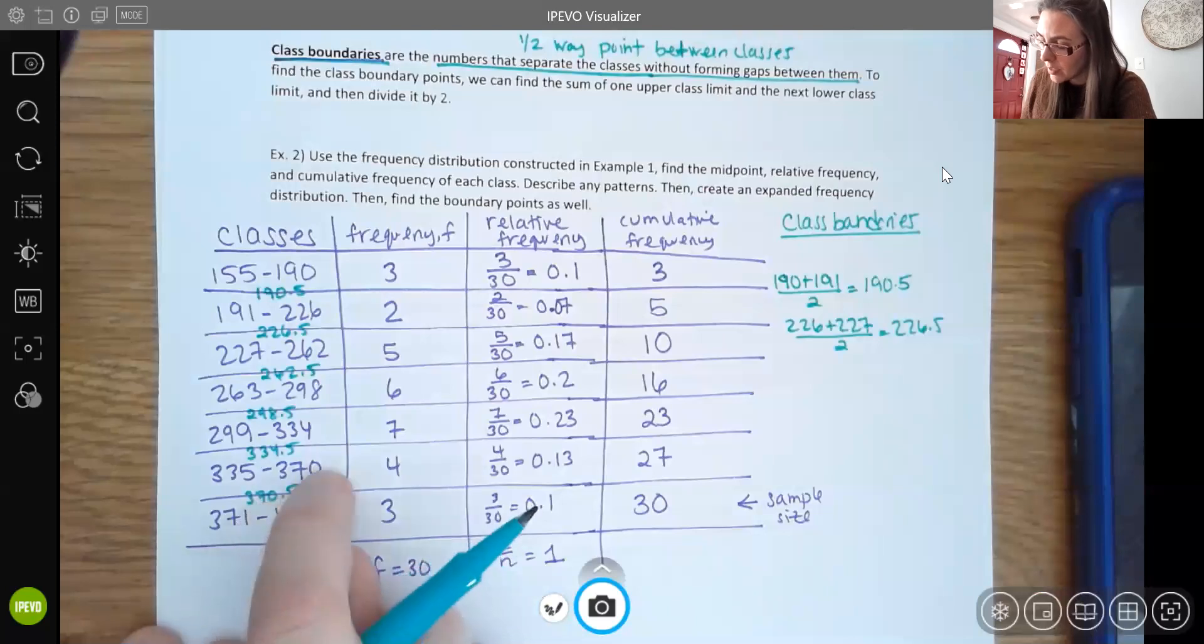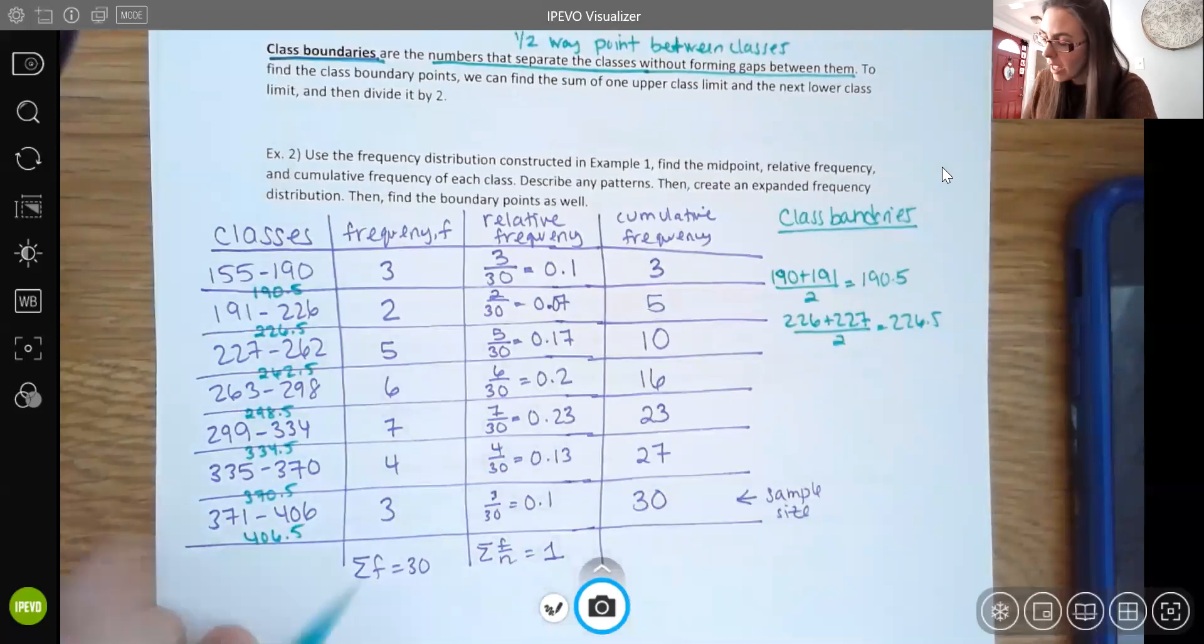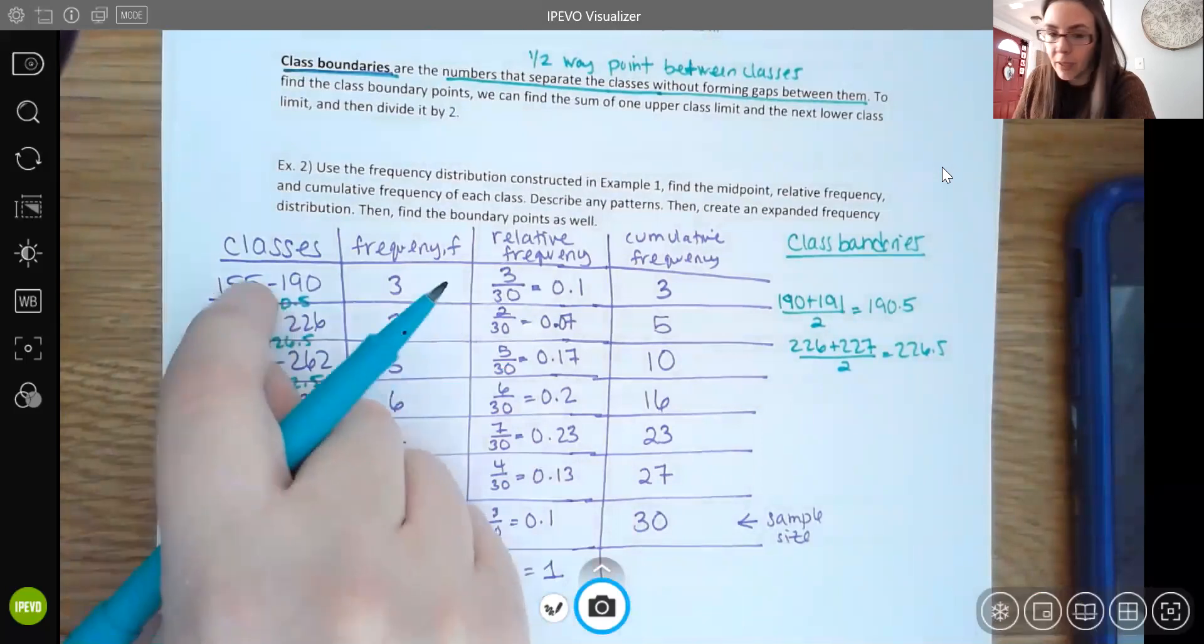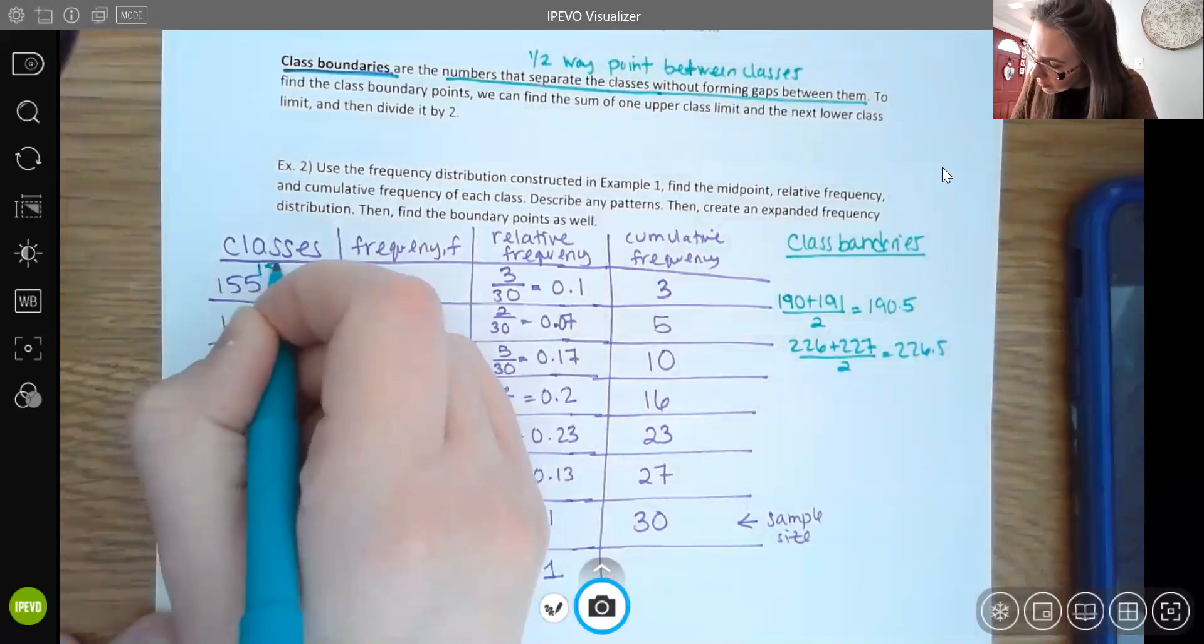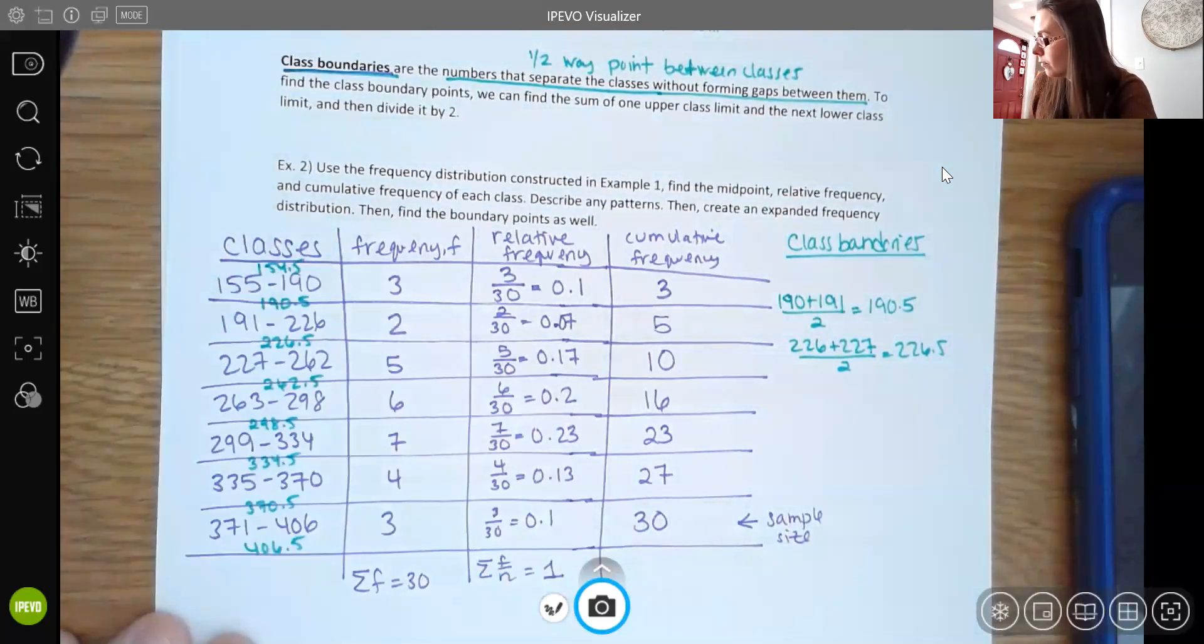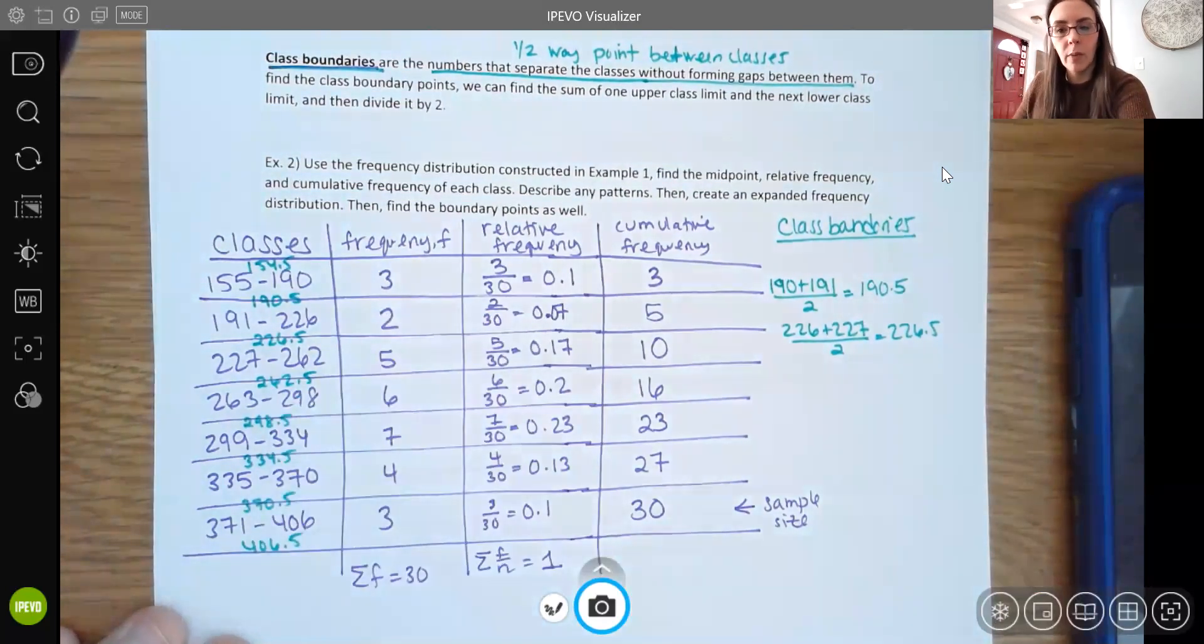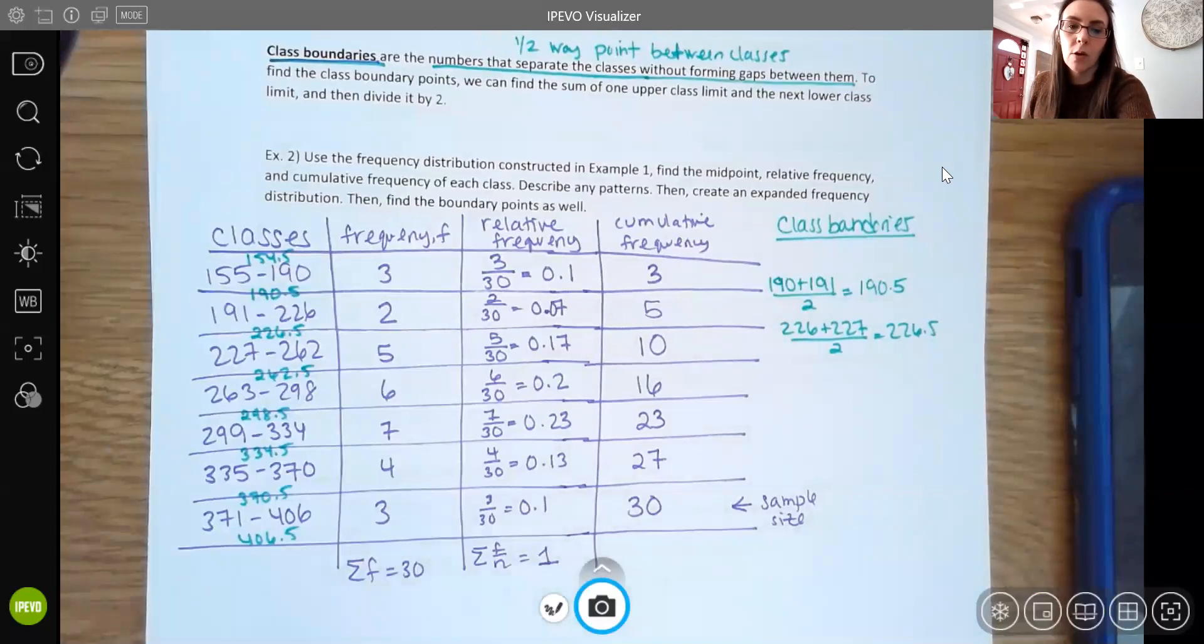Now you do have boundaries on the end though. So follow the pattern. Notice the pattern here was I would just add a half to each upper limit. So here my boundary point would be 406.5. And then on this end, notice that I would just subtract a half from each lower limit. So 263 minus a half is 262.5. So I can do that here too. This would be 154.5 as my lower boundary. So we're going to talk more about boundary points when we get to histograms. But those boundary points are really important in our graphs. A lot of times we use our boundary points to graph histograms and other forms of graphs, rather than the actual class values. So those boundary points and those class midpoints are particularly helpful when graphing, particularly with histograms. We typically use the boundary points or the midpoints as our tick marks on our axis.